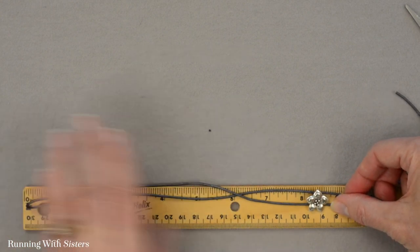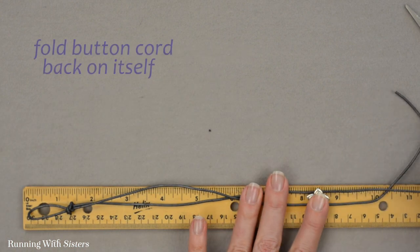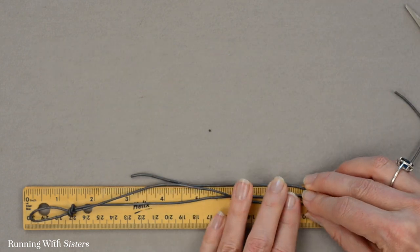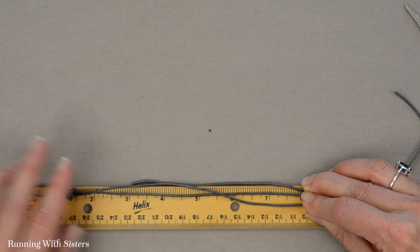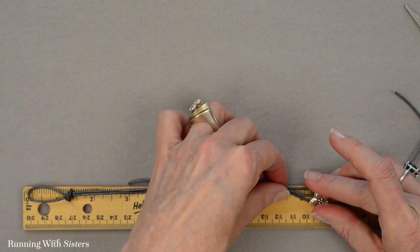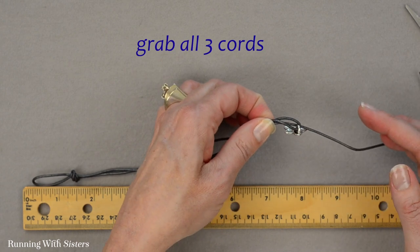And now what I want to do is take the cord that I ran through that button and I'm going to fold it back on itself like that. So now you see I've got what looks like three cords—really it's the two main cords and the one I just folded back. I'm going to grab all three cords and I'm just going to tie a simple knot.